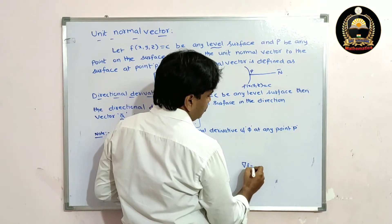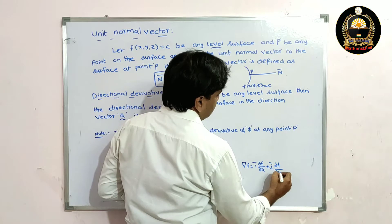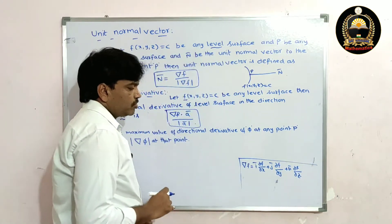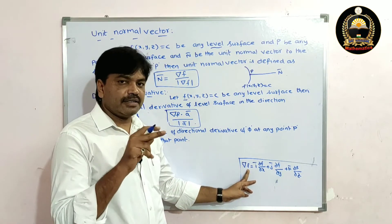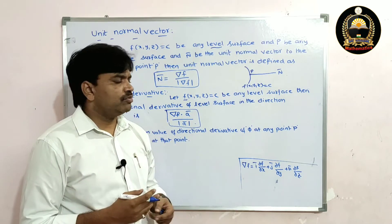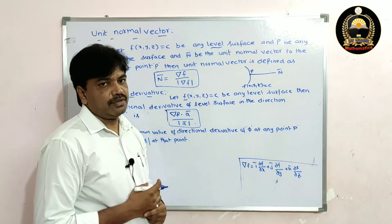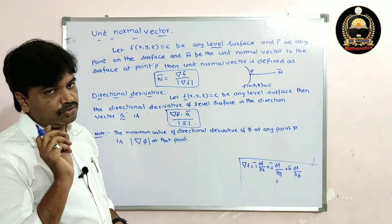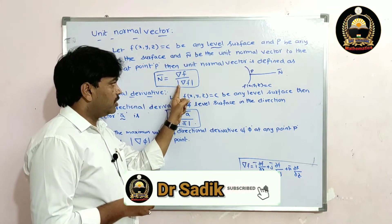How can you find ∇f? The formula is: ∇f = i̅ (∂f/∂x) + j̅ (∂f/∂y) + k̅ (∂f/∂z). You find this value at the point P — for example, if the given point is (1, 1, 2) or (x₁, y₁, z₁), substitute into the formula to get ∇f. Then find |∇f|, and you get the unit normal vector. Simply: n̄ = ∇f / |∇f|.